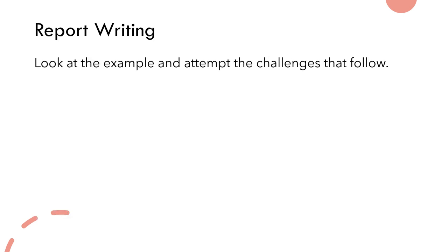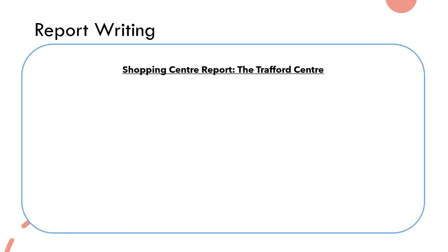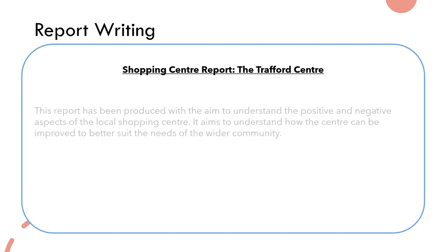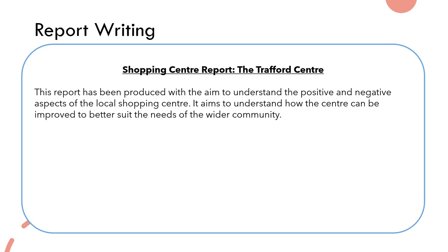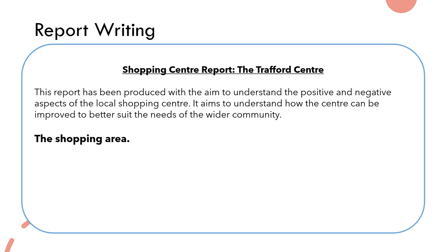Here we have a typical example of a report that you could use when you come to write your own version. First of all we have a headline very clearly stating what the purpose of the report is about: 'Shopping Centre Report — the Trafford Centre.' Then the introduction: 'This report has been produced with the aim to understand the positive and negative aspects of the local shopping centre. Its aim is to understand how the centre can be improved to better suit the needs of the wider community.' Then a subheading: 'The Shopping Area' — using headlines and subheadings to help organise ideas.